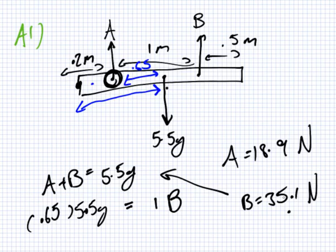36.92. What did you get for A? 10.79. No, because if you add those two together you don't get 5.5G. So you solved your equations incorrectly because you need the A plus B to equal 5.5G.